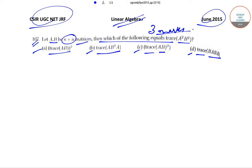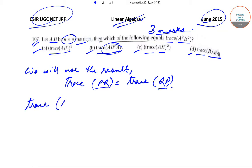So now what we'll try to do is that we'll use the result: trace of PQ is equal to trace of QP. So such kind of arrangement you can only see is possible in the second option. So let us try to find out trace of AB²A.